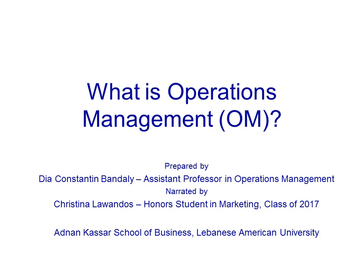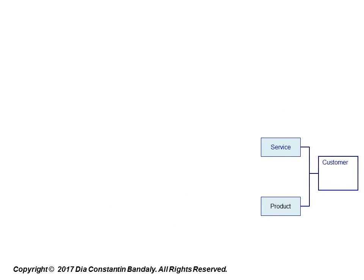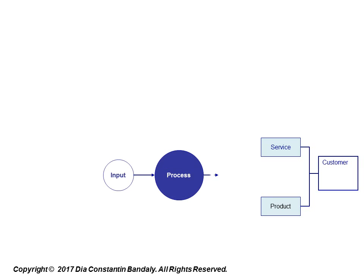What is operations management? In any organization, operations management is the function that gets things done. A customer wants to buy a product or a service. To make this product or deliver this service, a firm uses a specific process that converts inputs into the desired output — the product or service the customer wants.